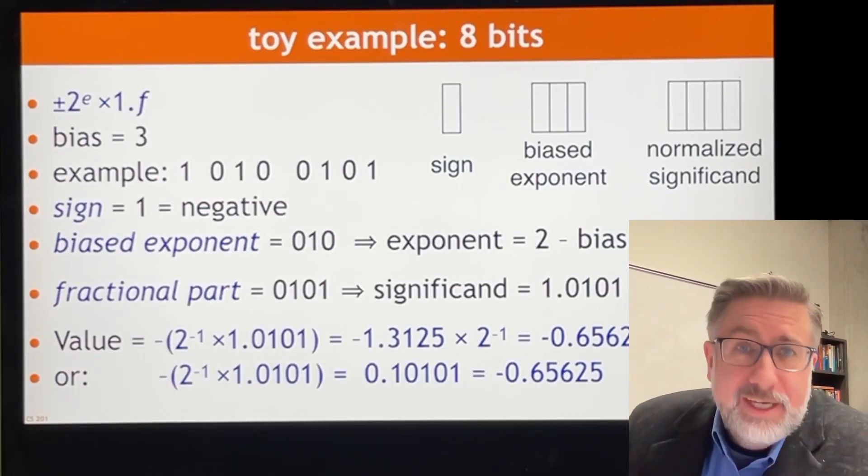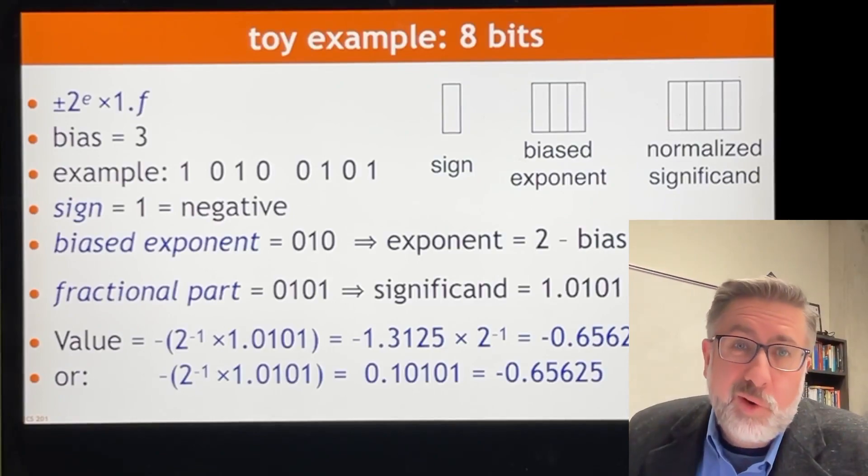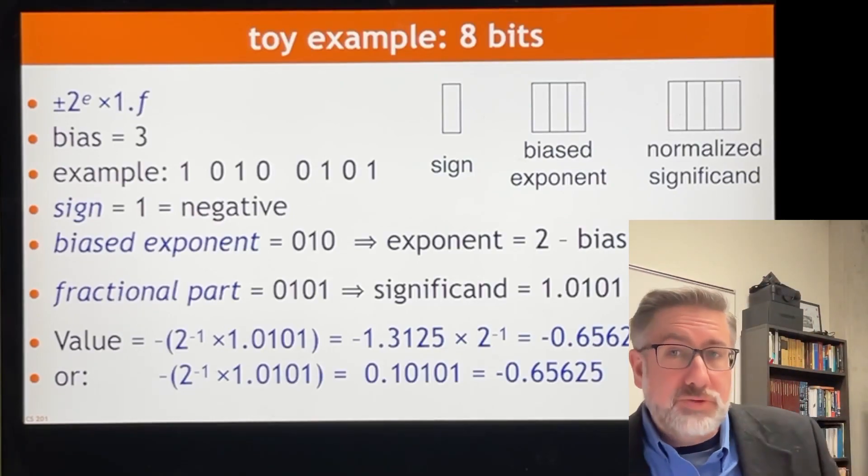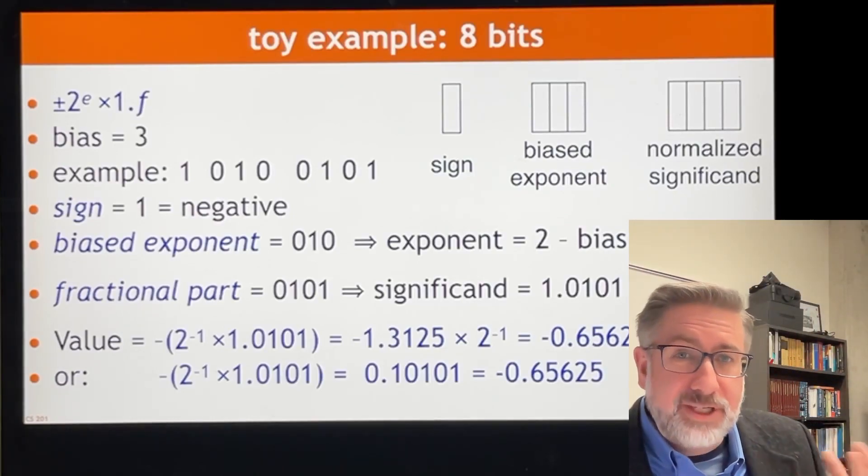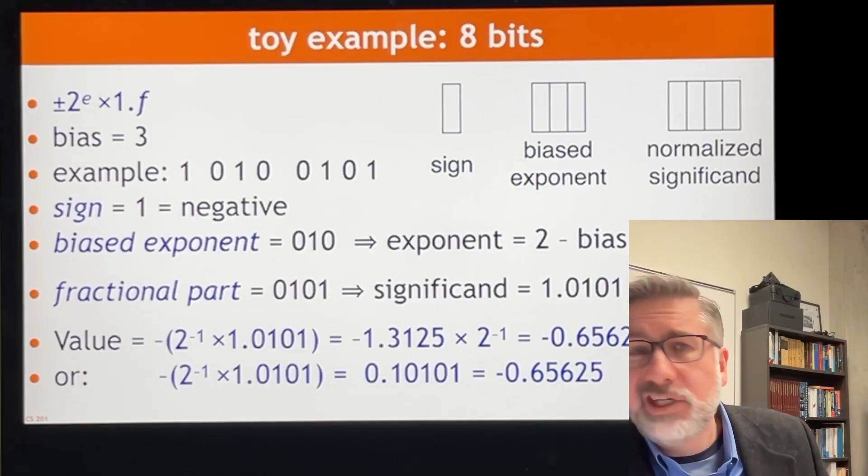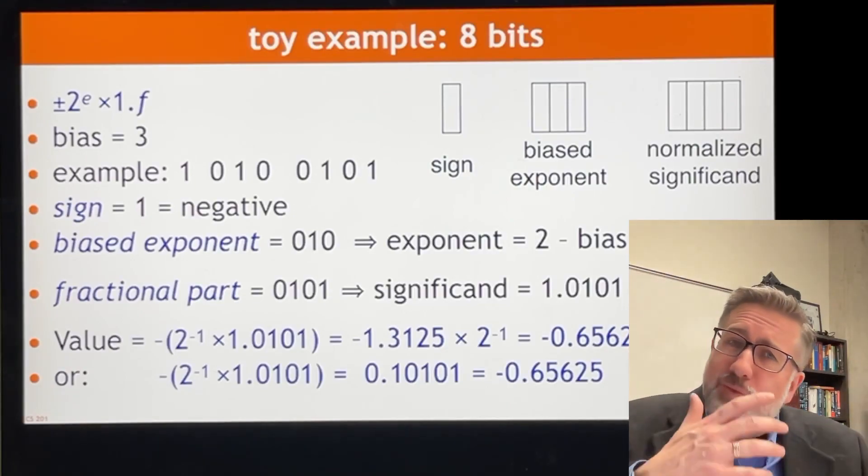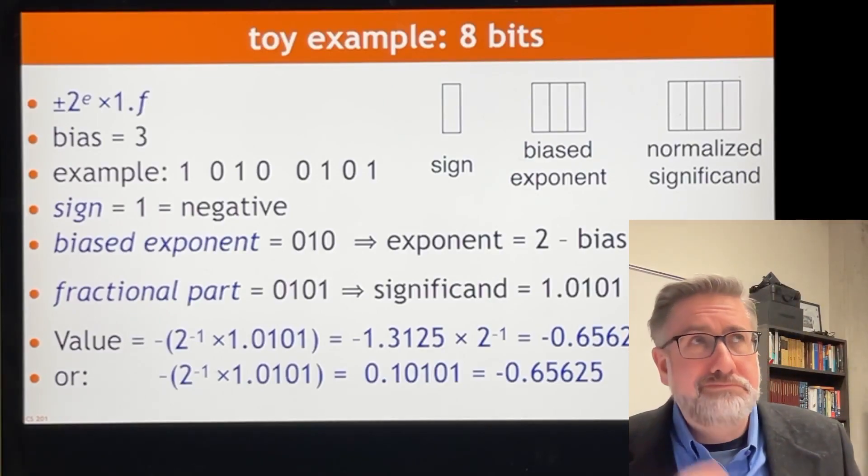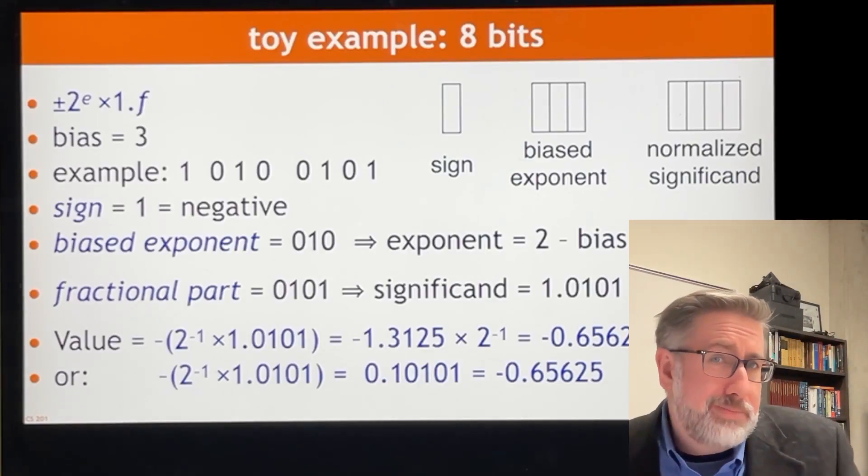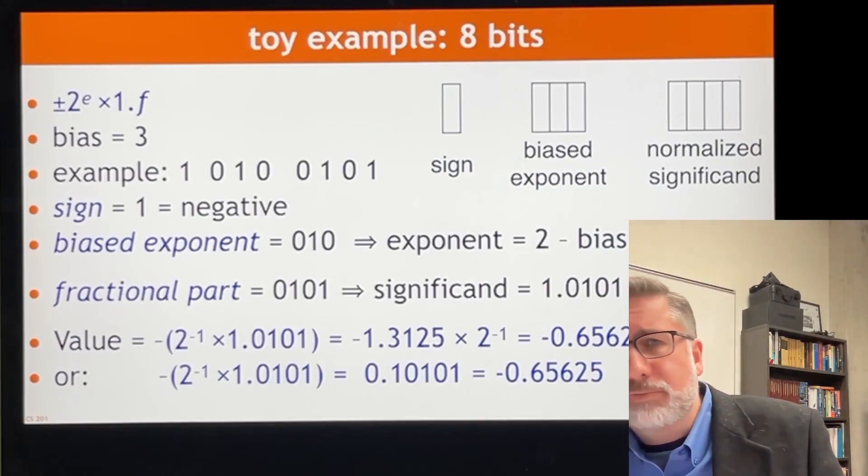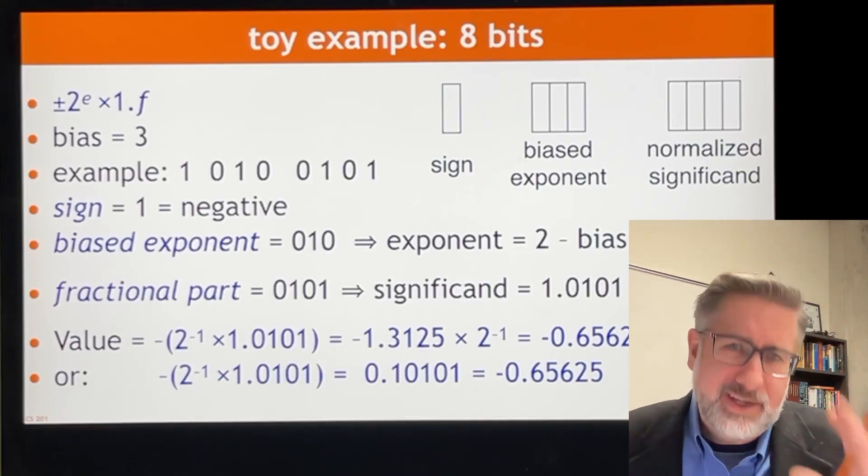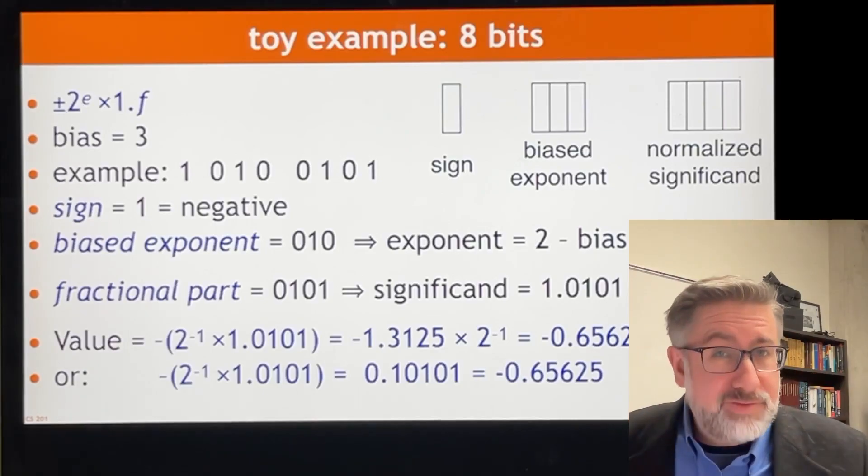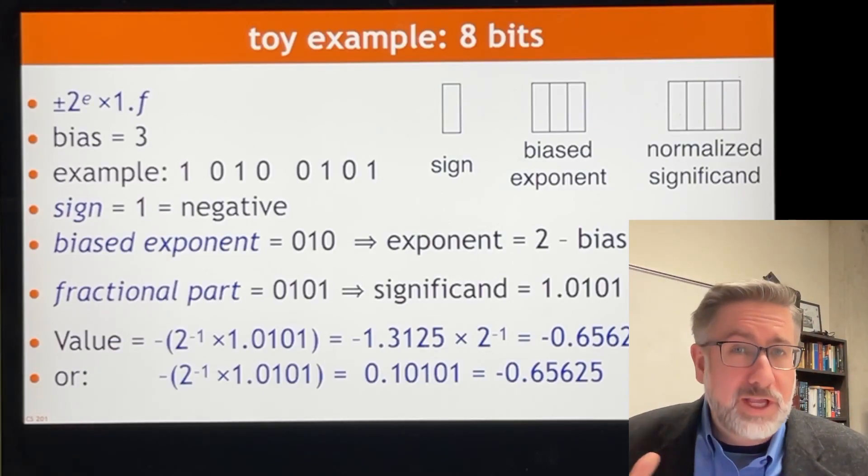We need one bit for the sign that tells us whether the number is positive or negative. We're going to use three bits for the exponent, and that's going to give us an exponent between 0 and 7. But because we bias it, it's going to give us an exponent between negative 3 and positive 4, or negative 4 and positive 3, or something like that. And we'll see how that works exactly later on.